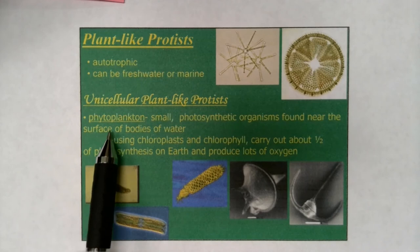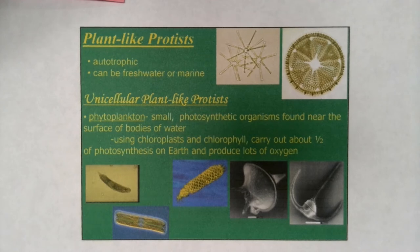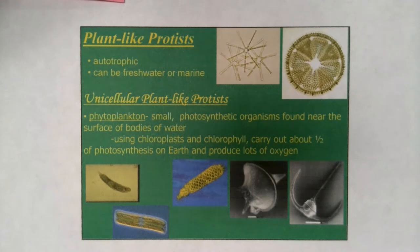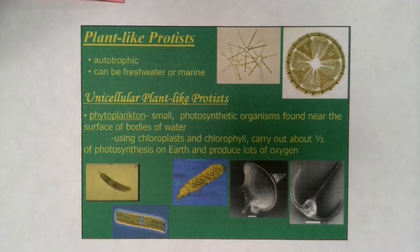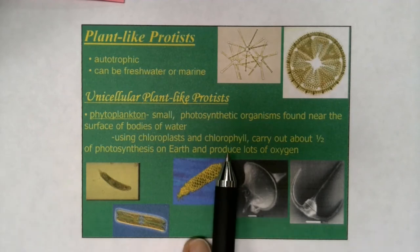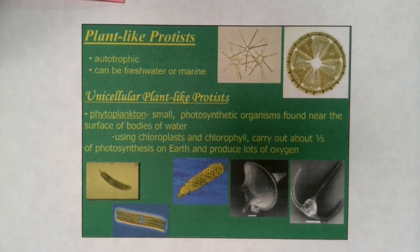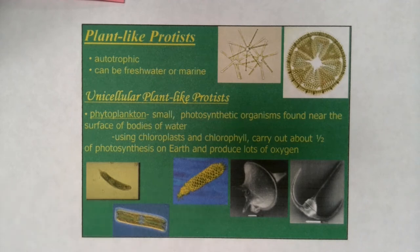If they're unicellular plant-like protists, they are known as phytoplankton — small photosynthetic organisms near the surface of bodies of water, whether ocean or lakes. They use chloroplasts and chlorophyll to trap the sun's energy and carry out photosynthesis. They actually carry out about half of the photosynthesis on Earth, producing a whole lot of oxygen. The other half is carried out by plants and photosynthetic bacteria.